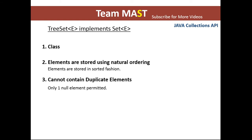There is also TreeSet, which implements the set interface. The elements in a TreeSet are stored in natural sorted order. For example, if you insert 2, then 3, then 1 into a TreeSet, the elements will automatically be stored as 1, 2, 3 in sorted fashion. A TreeSet cannot contain duplicate elements, and only one null element is permitted.